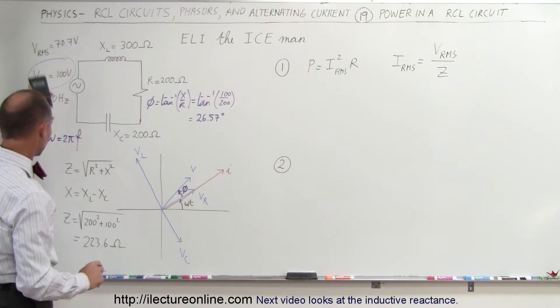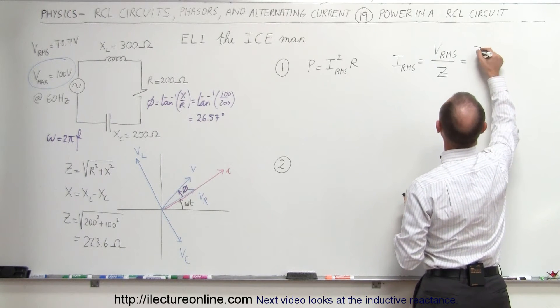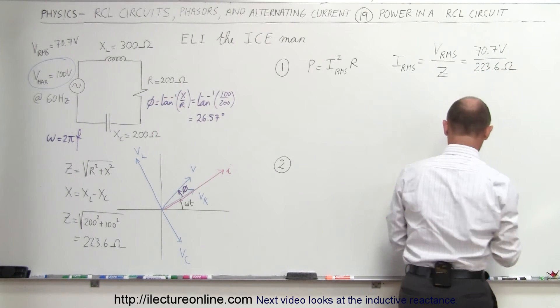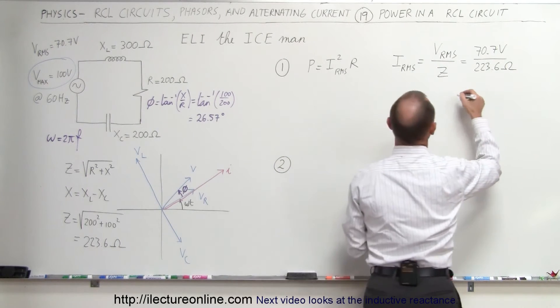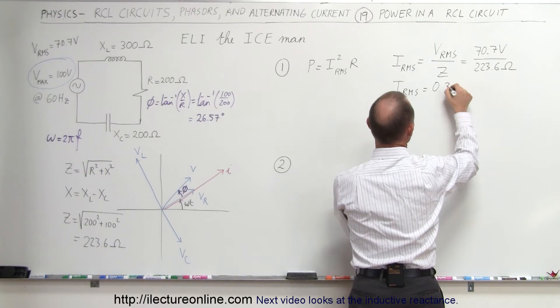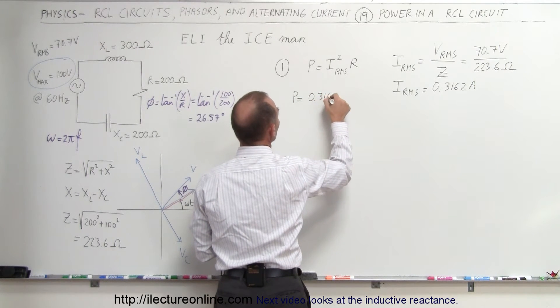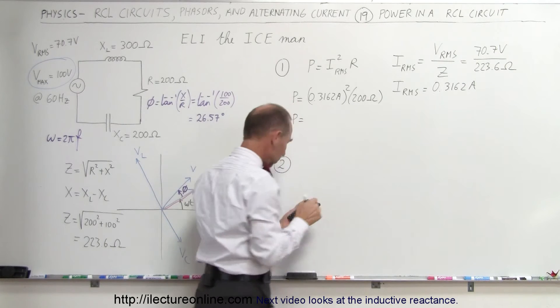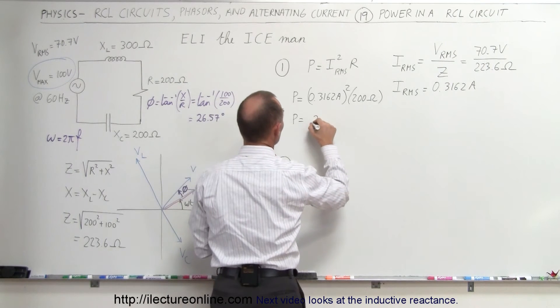We then take the VRMS divided by the resistance, and that gives us I squared. So this is equal to 70.7 volts divided by 223.6 ohms. IRMS is equal to 0.3162 amps, which means that the power consumed in the circuit would be equal to 0.3162 amps squared times the resistance of 200 ohms. The power is equal to 19.99 or just about 20 watts.